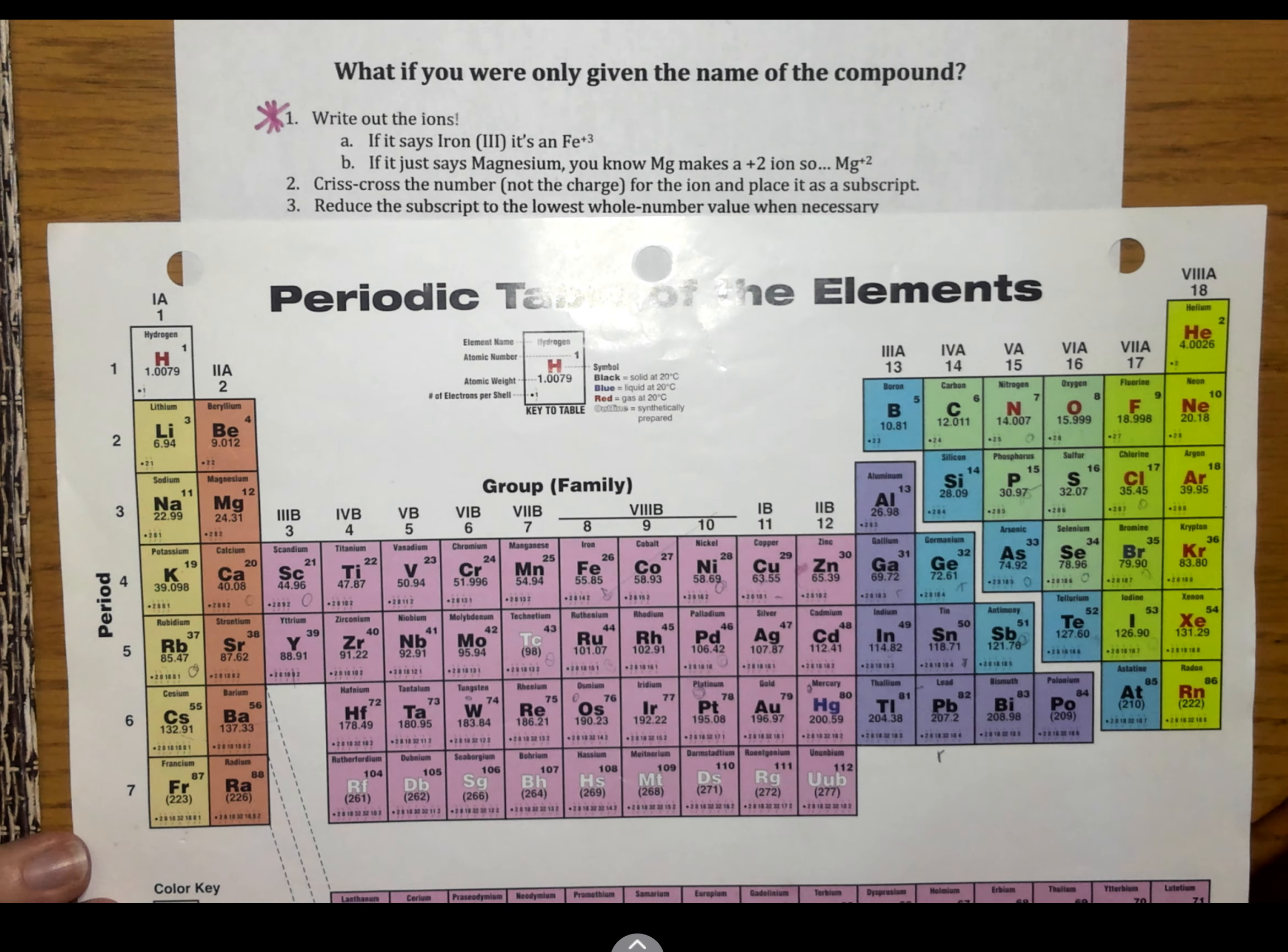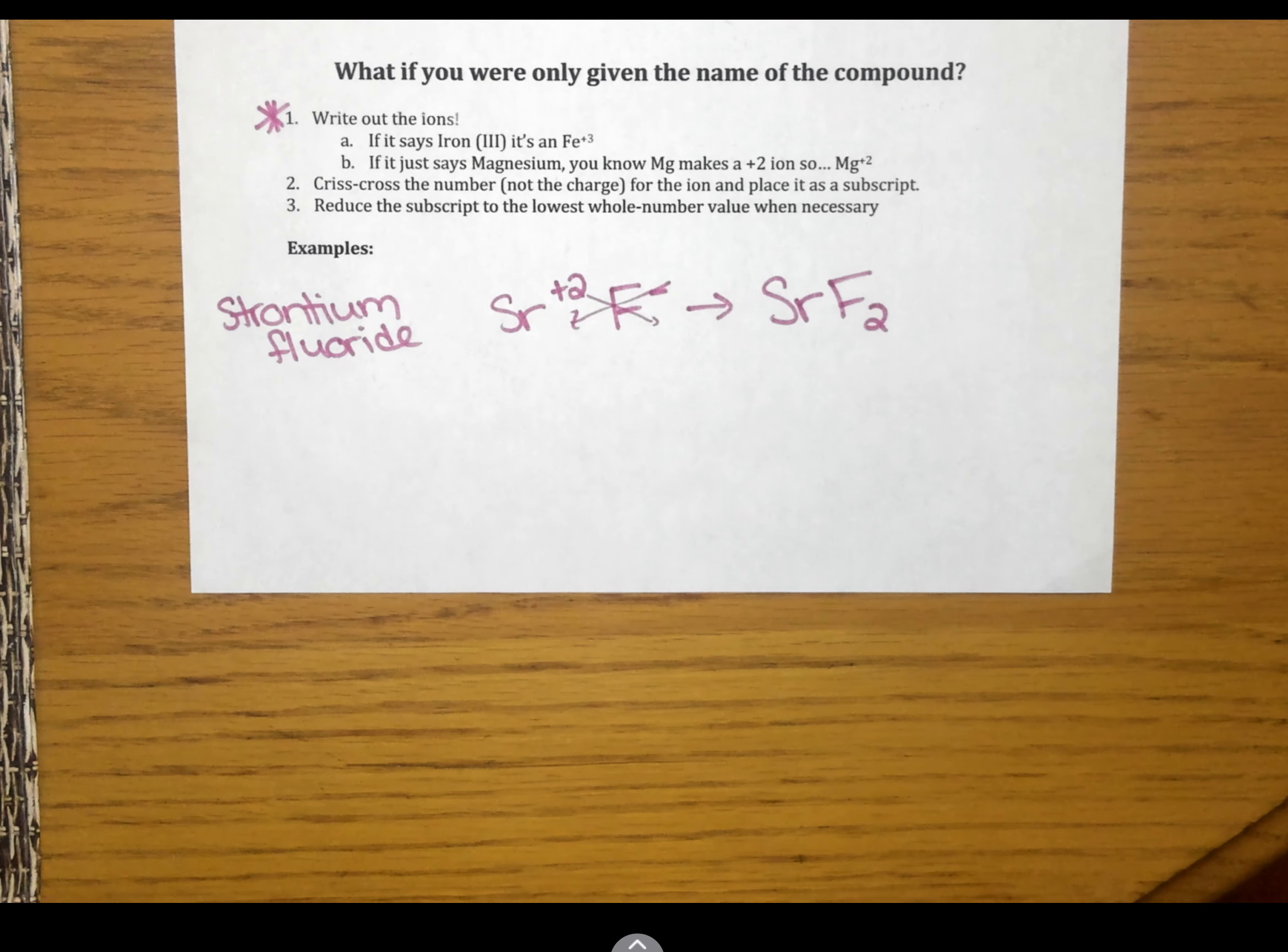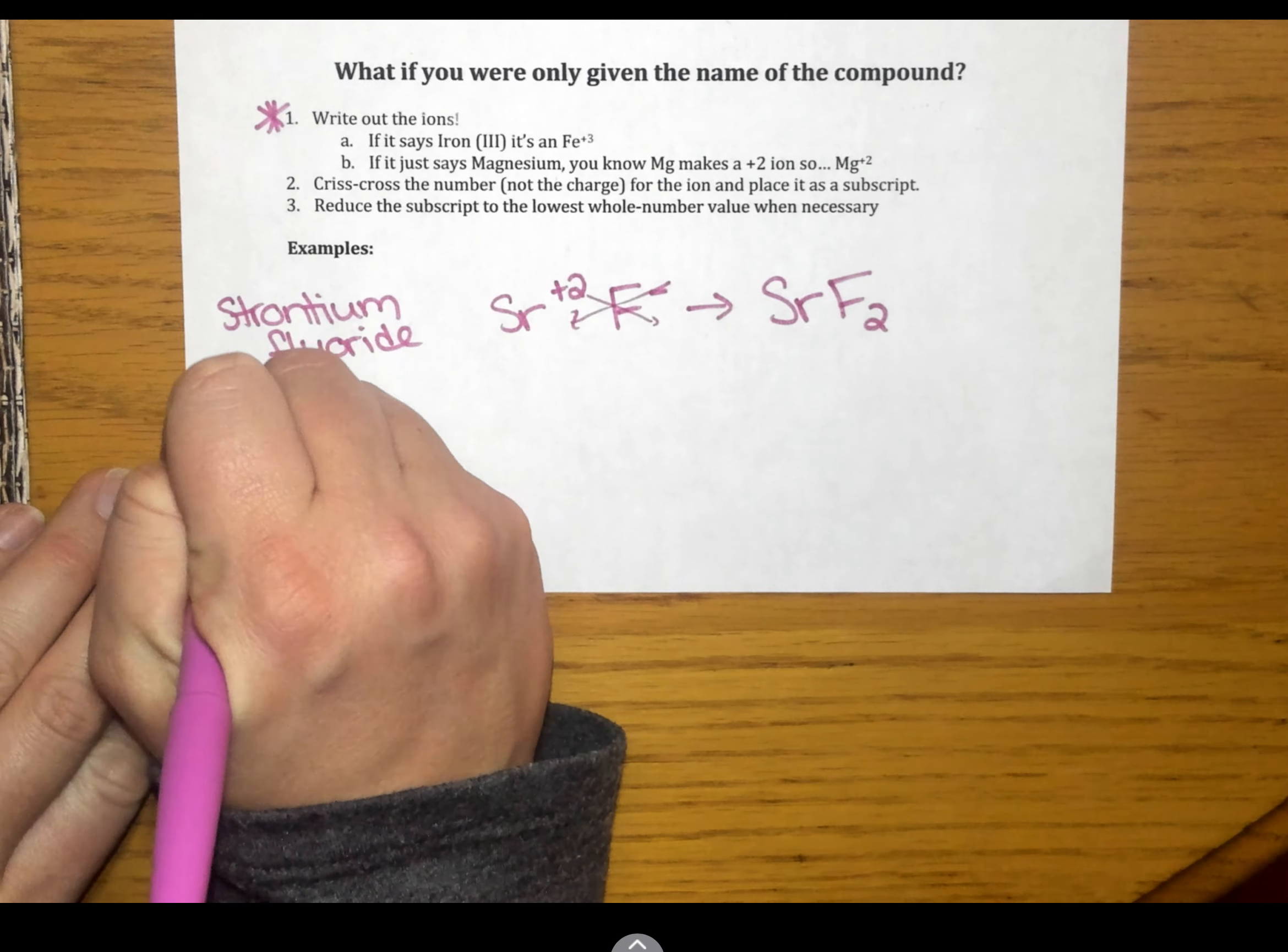So, strontium is Sr. Well, I find Sr. It's in group 2. That means it has a plus 2 charge. Fluoride. Well, fluoride's over here. It's a halogen. It's going to gain 1 to become like neon. So, it's going to have a negative 1 charge. So, we crisscross our charges down. And we end up with SrF2.